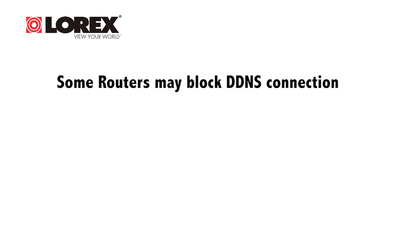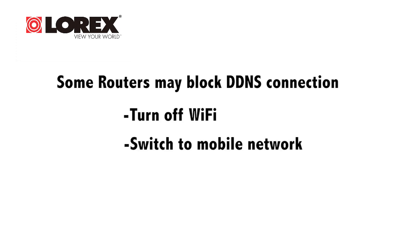Note: some routers may block the DDNS connection from an internal network. If this happens, turn off your Wi-Fi and switch to your mobile network. Allow a few seconds for the connection to establish. To disconnect from your DVR, touch Logout.